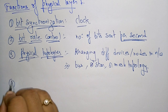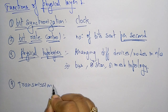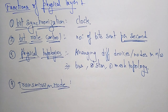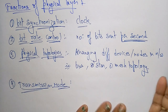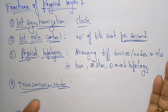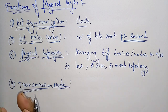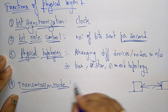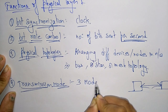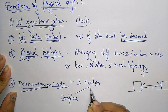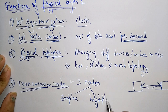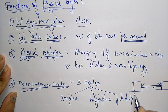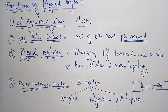The next function is transmission mode, which is an important function. The physical layer defines in which mode the data has to be transferred from host to destination — from sender to receiver. This data flow between two connected devices can be done using three modes: simplex, half duplex, and full duplex. With the help of these three modes we transfer data between sender and receiver in the physical layer.